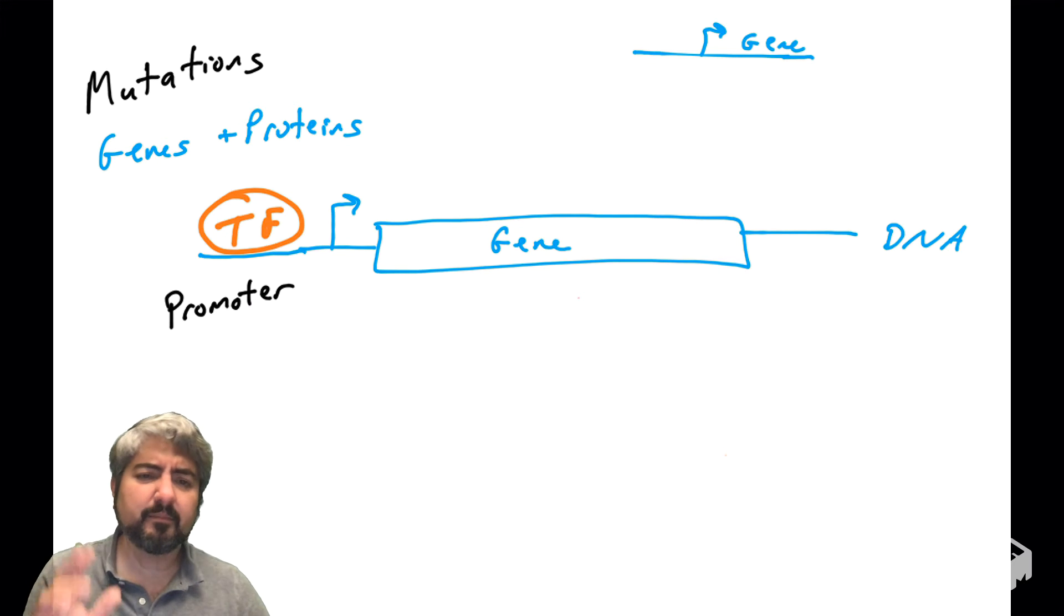There are other proteins there, but transcription factors are typically the proteins that are binding directly to the promoter, the nucleotide sequence of the promoter. And transcription factors are recruiting other proteins that will lead to the transcription of the gene.